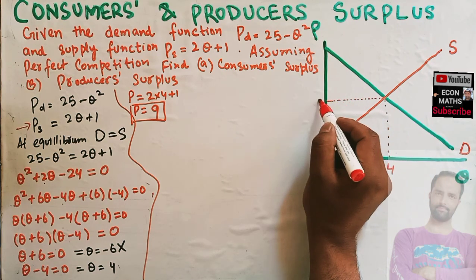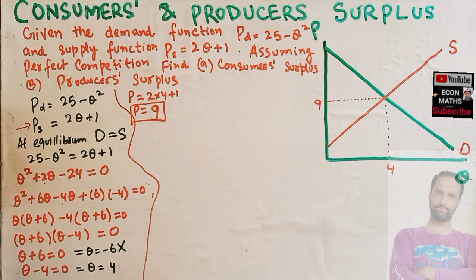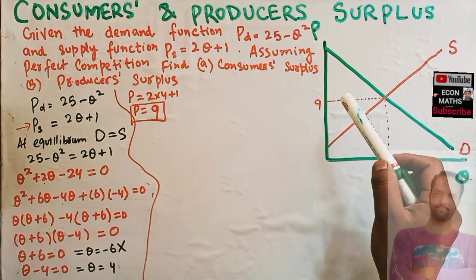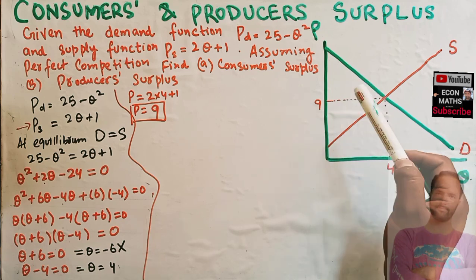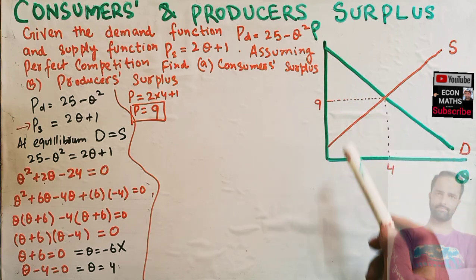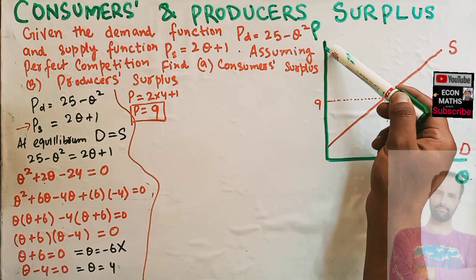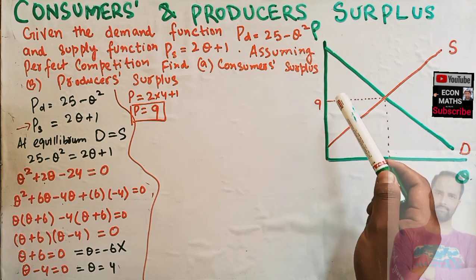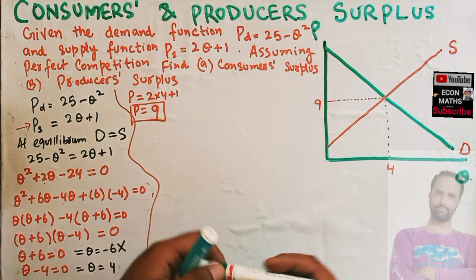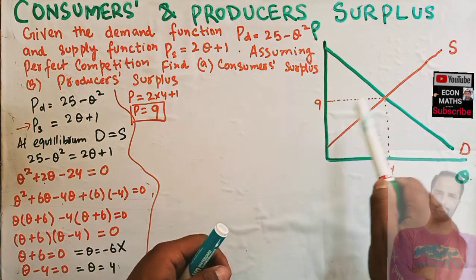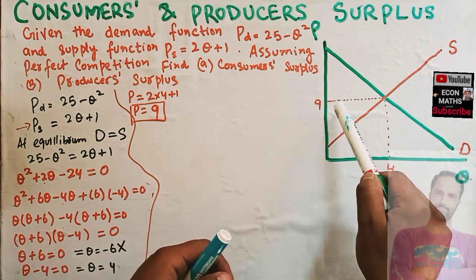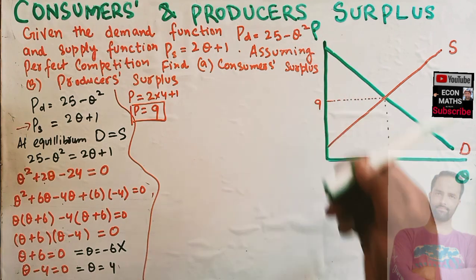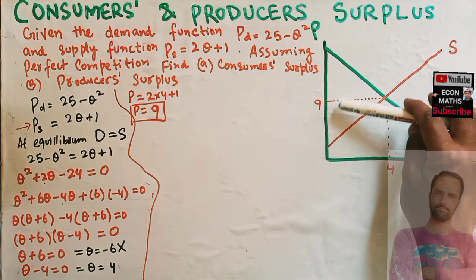Now we can calculate consumer surplus. Consumer surplus is simply the difference between the price a consumer would be willing to pay for an item and the price he actually pays. A consumer would be willing to pay a higher price, but since he pays only the equilibrium price, the difference gives us the consumer surplus — it is the area above the equilibrium price and below the demand curve.